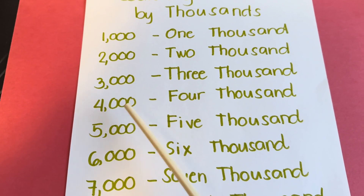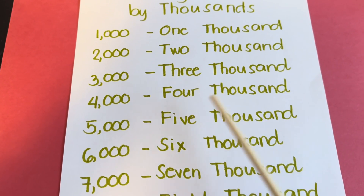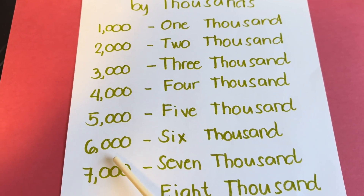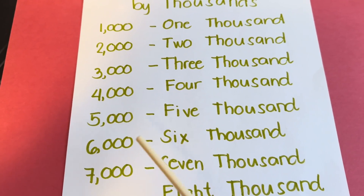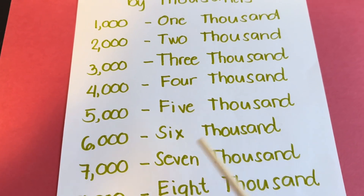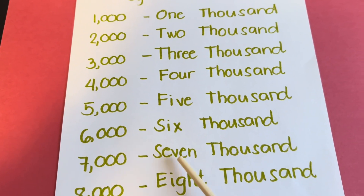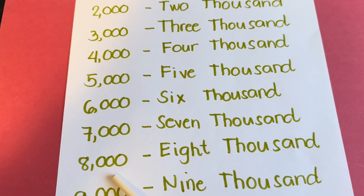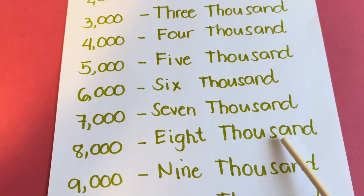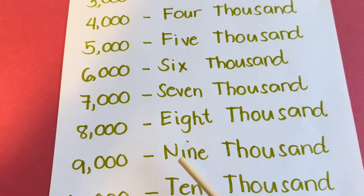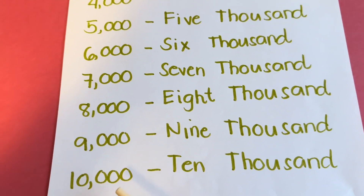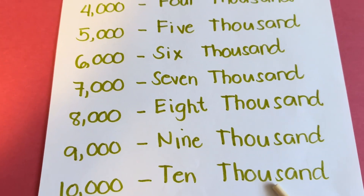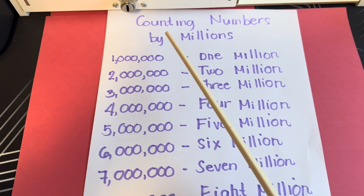Counting numbers by 1,000: 1,000, 2,000, 3,000, 4,000, 5,000, 6,000, 7,000, 8,000, 9,000, 10,000.